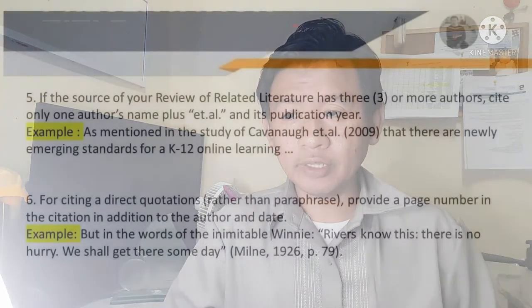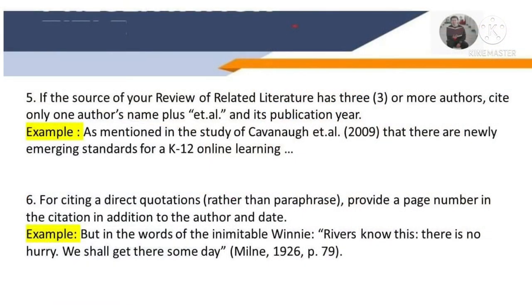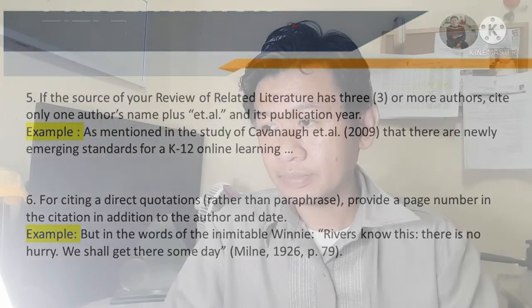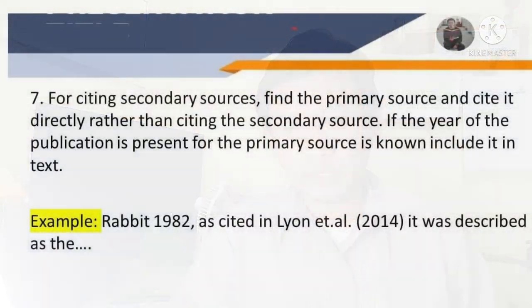If the source of your review of related literature has three or more authors, cite only the first name plus et al. and its publication year — for example, as mentioned in the study of Kavanaugh et al. (2009), there are newly emerging standards for K-12 online learning. For citing direct quotations rather than paraphrases, provide a page number in the citation in addition to the author and date — for example, Mile (1926, p. 79).